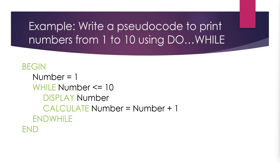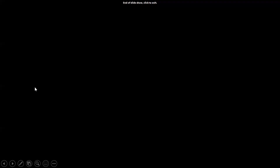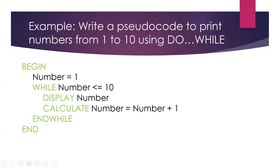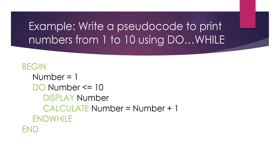Now let's discuss how to write pseudocode using do-while. In a while loop we have a variable — in this case 'number' set to 1 — and every time within the loop we print the number, then increment by one. With do-while, the difference is you begin with 'do' at the top and the condition with 'while' comes at the end — that's why we call it do-while.